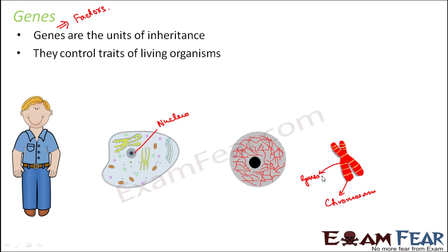The number of chromosomes present inside a cell in a particular organism is constant. For example, in human beings the total number of chromosomes in each cell is 46. But on each chromosome you have thousands of genes, because if you consider the number of traits we have — eye color, eye shape, hair color, facial features, shape of your palm, shape of your fingers — there are so many traits, and that is why on each chromosome you have almost thousands of genes, each gene coding for a particular trait.